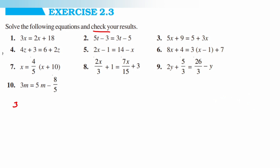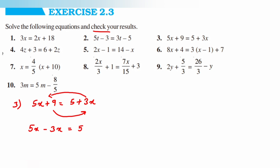The third question is 5x plus 9 is equal to 5 plus 3x. We need to find x. Transpose 3x to the left side and 9 to the right side, so 5x minus 3x is equal to 5 minus 9, giving 2x is equal to minus 4. So x is equal to minus 4 divided by 2, which gives x is equal to minus 2.